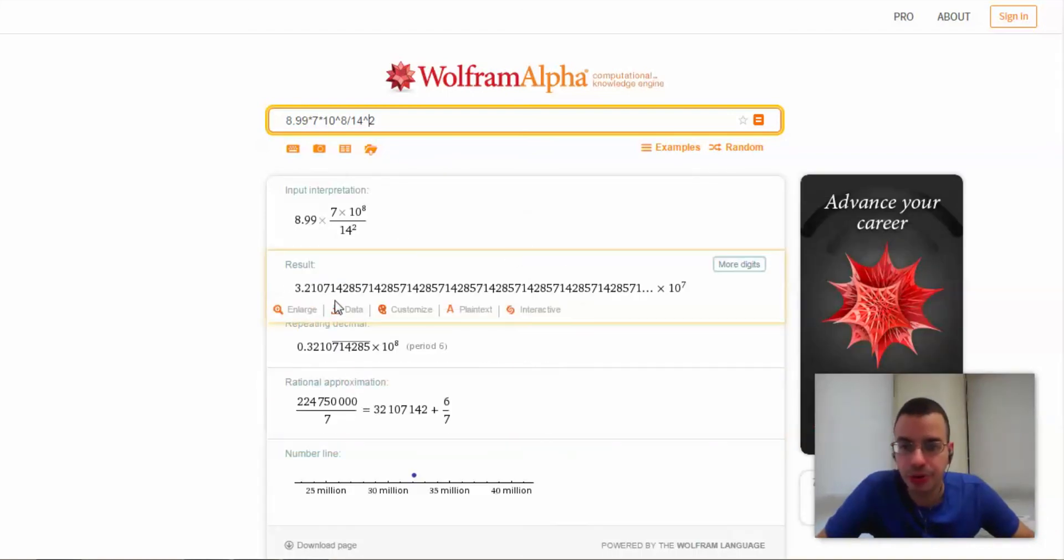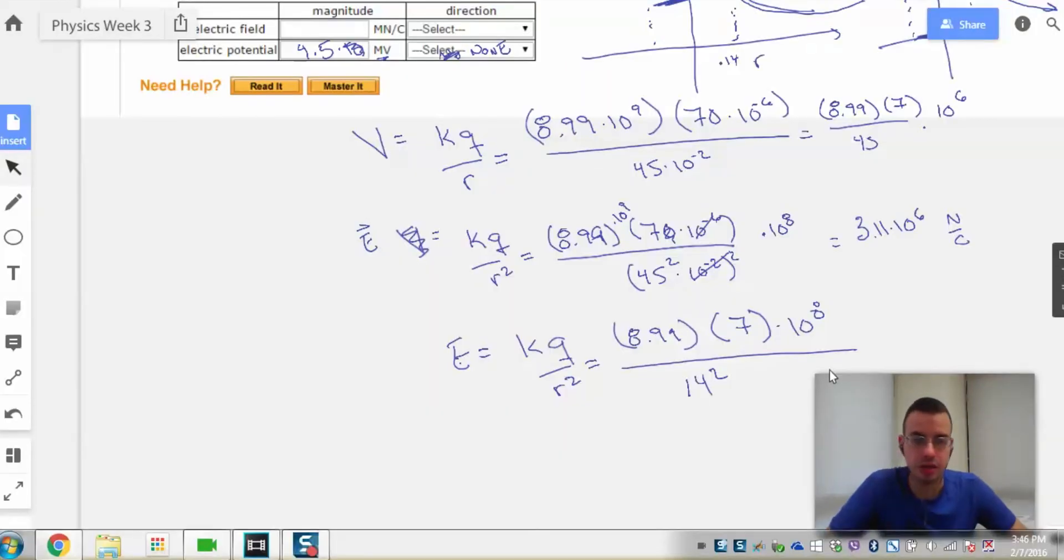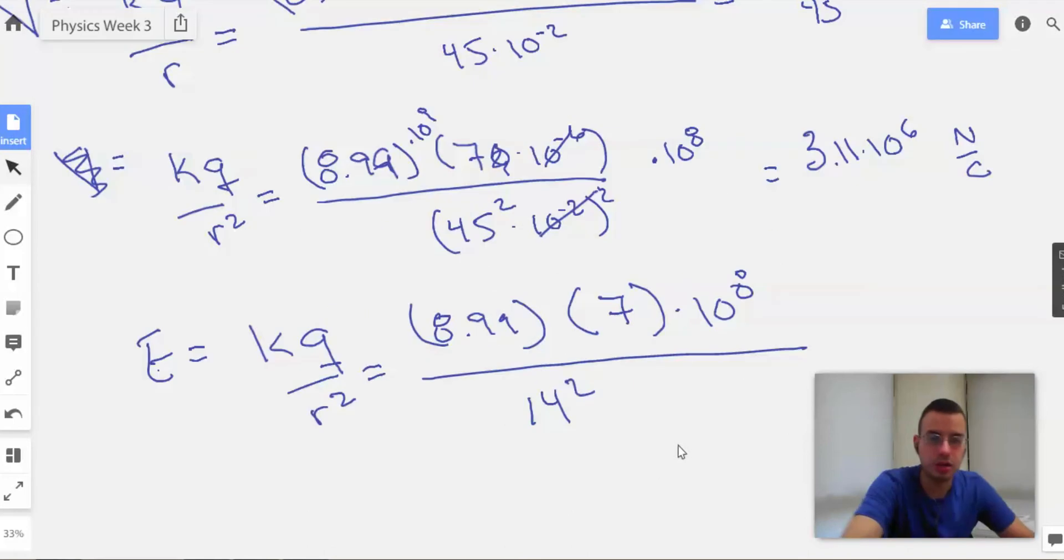3.2 times 10 to the 7th equals 32 times 10 to the 6th meganewtons.